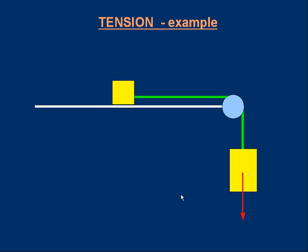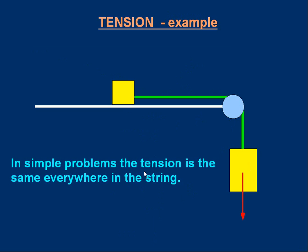Another common problem is two objects connected by string, where the string goes over a nice smooth round surface. As the heavier object falls down, it drags the other object along with it, and you may have to work out the acceleration or the tension. In simple versions of the problem, the tension is the same everywhere in the string. So if the top box is pulled with 10 newtons to the right, there's an upward force of 10 newtons on the box on the right-hand side as well. Usually it will be clear that the tensions in the two parts of the string are equal, which simplifies the problem.